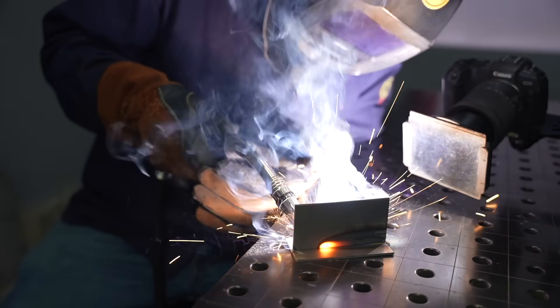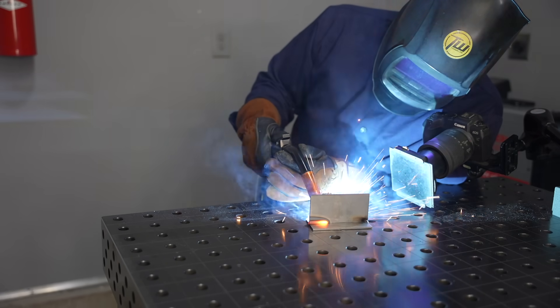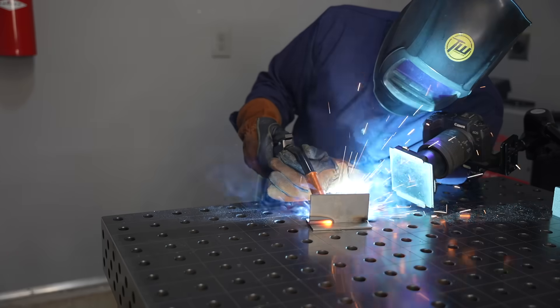Rather than using flux to protect that weld pool from the air, you can also use a gas that comes out around your arc. The next two processes that we're going to look at both use what's called a shielding gas to protect that molten weld pool from the air. The first one is MIG, or gas metal arc welding. Gas metal arc welding has a lot in common with flux core, and it even uses the exact same gun.